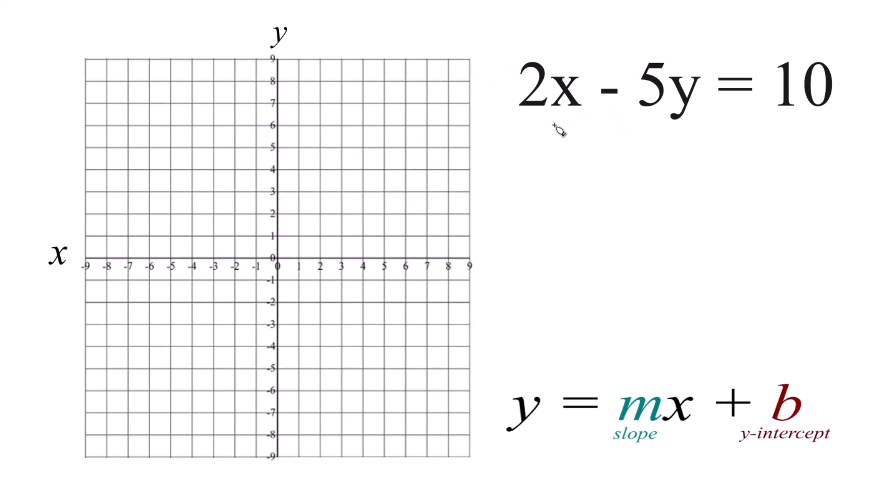So here's how you can graph the linear equation 2x minus 5y equals 10. There are two ways you could do it.